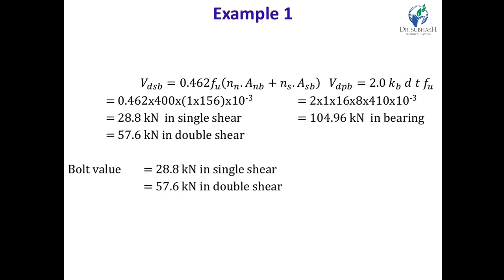In single shear, the bolt value is 28.8 kN, and in double shear it is 57.6 kN. You can see that the minimum between shear capacity and bearing capacity is the shear capacity — meaning the joint fails under shear capacity. So the bolted connection should be provided as per shear capacity. Just two steps are needed: shear capacity of bolt and bearing capacity of bolt.